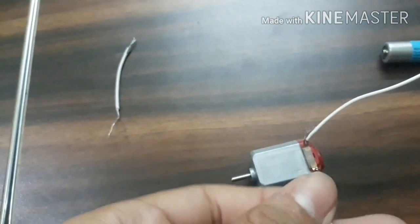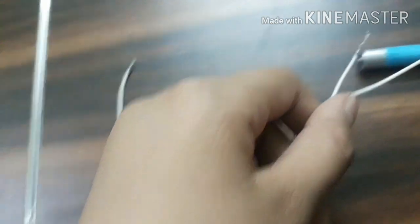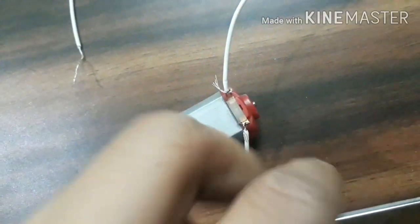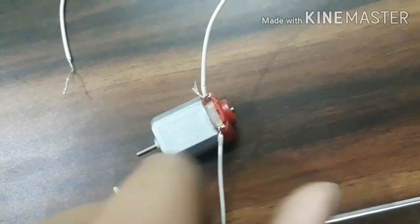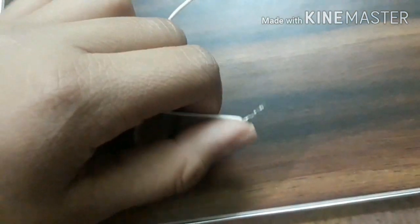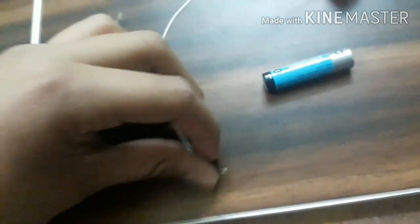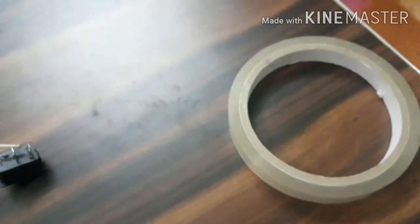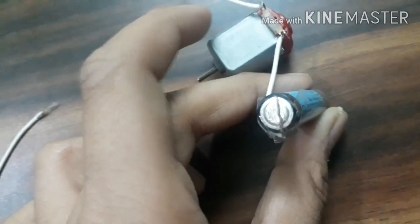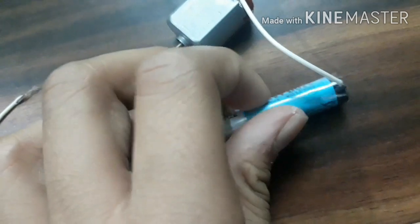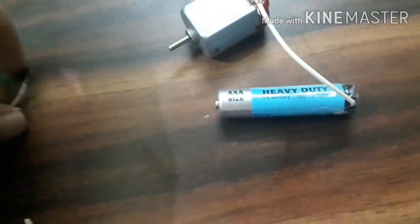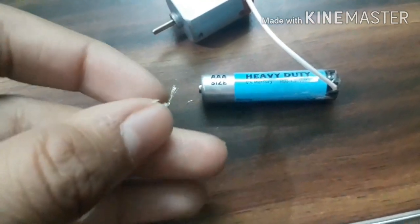Now all you need to do is to connect this wire, this motor, and the tin to the battery. I have connected the wire to this motor like this. Now we will connect this portion of the wire to the cell with the help of the tape and you can see that it is connected.